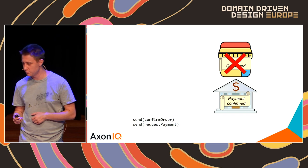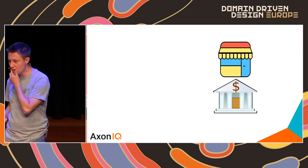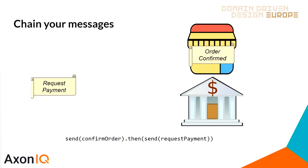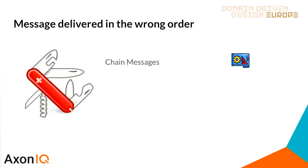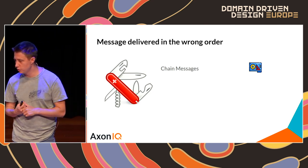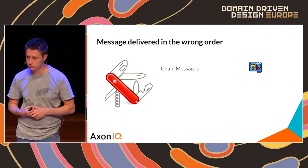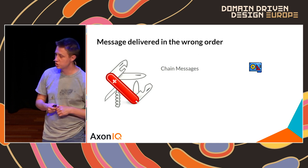One way to fix this is to chain messages: first send confirm-order, wait for the response, then send request-payment. Once payment is confirmed, we're happy. If any step fails, we can roll back. This is a pure design solution — how you chain messages depends on your domain.